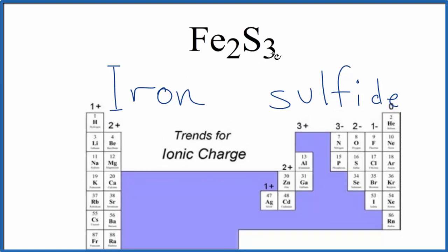In Fe2S3, it's bonded to sulfur. So we find sulfur here. Sulfur, when it forms bonds, each sulfur here is going to have a 2- ionic charge.